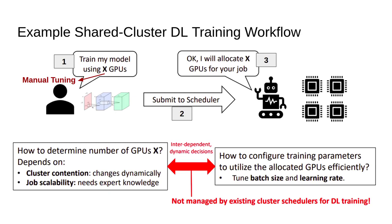Consider this example shared cluster DL training workflow. The first step is manual tuning, where users submitting jobs set training parameters. The authors consider the training parameters to be learning rate eta and batch size. Based on these, the scheduler decides how many GPUs are required. The batch size and learning rate are submitted to the scheduler, which then decides how many GPUs to allocate for the job.